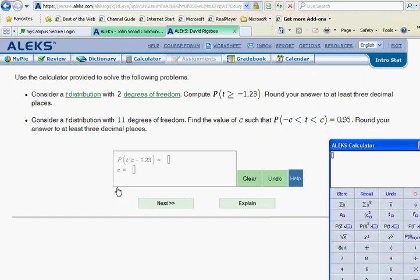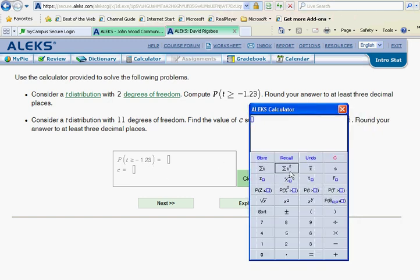Notice here that the first time out they are giving us the t-score. They simply want the area under the curve to the right of it. Well, as you recall, the button likes that. That's the side the button likes. So we simply go up here and hit your P of t button.